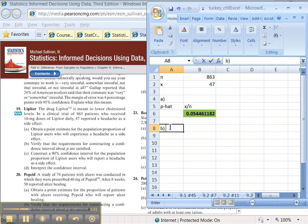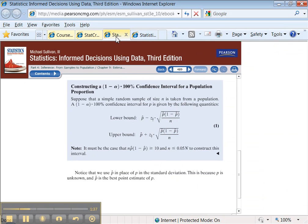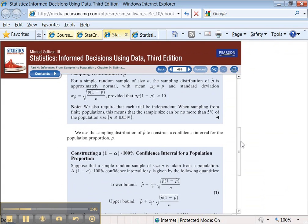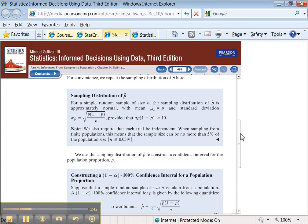All right, now for Part B, verify that the requirements are met for constructing a confidence interval. Well, let's go back and see what kind of requirements we've got here. Ah, we've got two requirements.